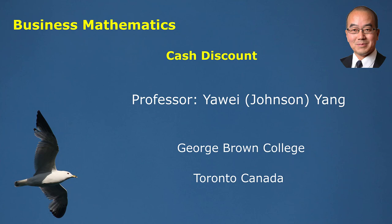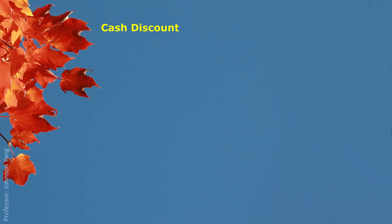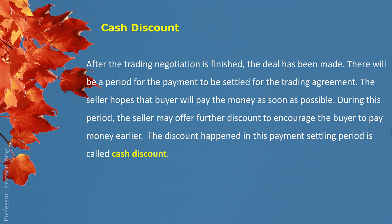Hello everyone. Here we talk about cash discount. After the trading negotiation is finished and the deal has been made, there will be a period for the payment to be settled. The seller hopes that the buyer will pay as soon as possible. During this period, the seller may offer a further discount to encourage the buyer to pay earlier. The discount that happens in this payment settling period is called cash discount.